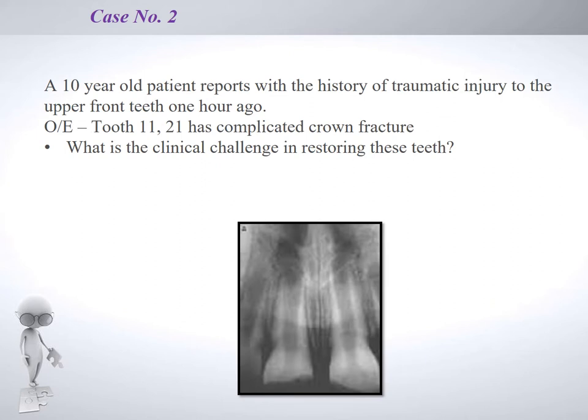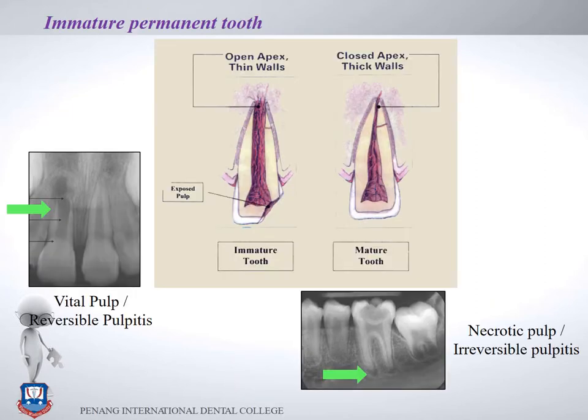Case number two: a 10-year-old patient reports with a history of traumatic injury to the upper front teeth one hour ago. On examination, teeth 11 and 21 have a complicated crown fracture — fracture of enamel and dentine exposing the pulp. The clinical challenge when restoring this tooth is that the root apex is wide open, so conventional root canal therapy will not work. We need to think of something else to preserve whatever pulp is there.